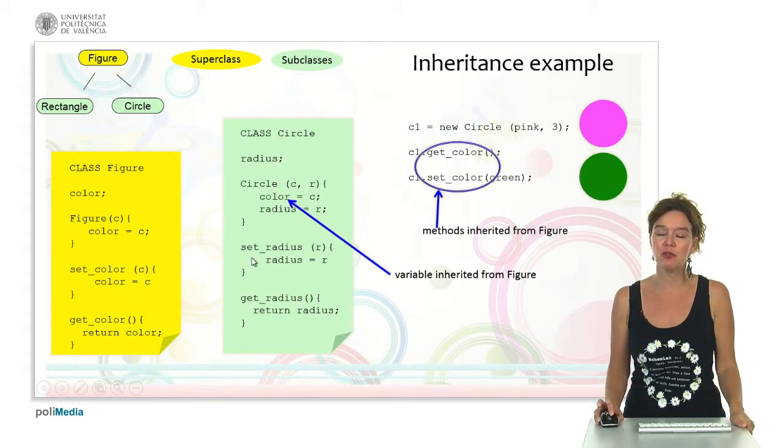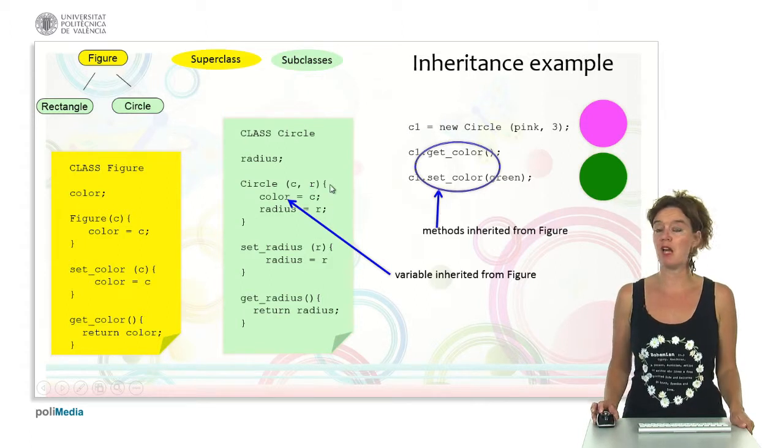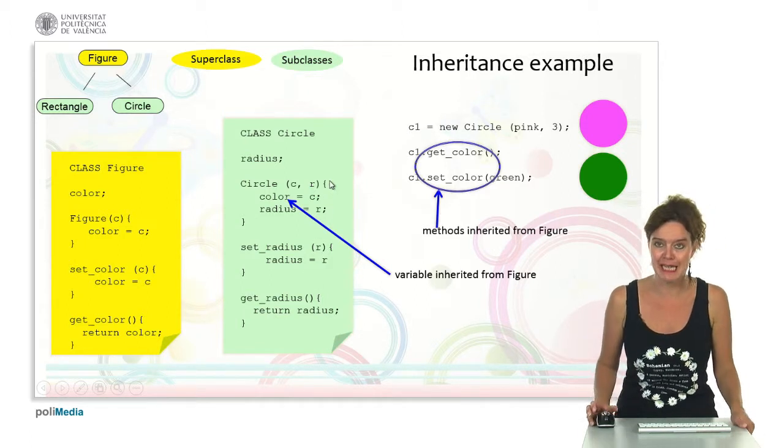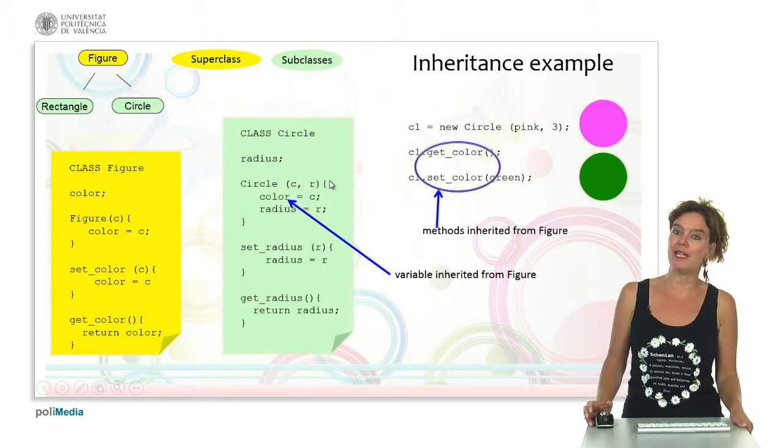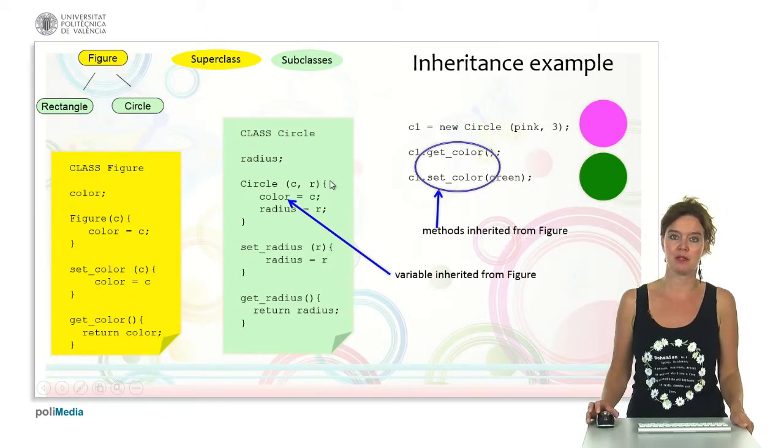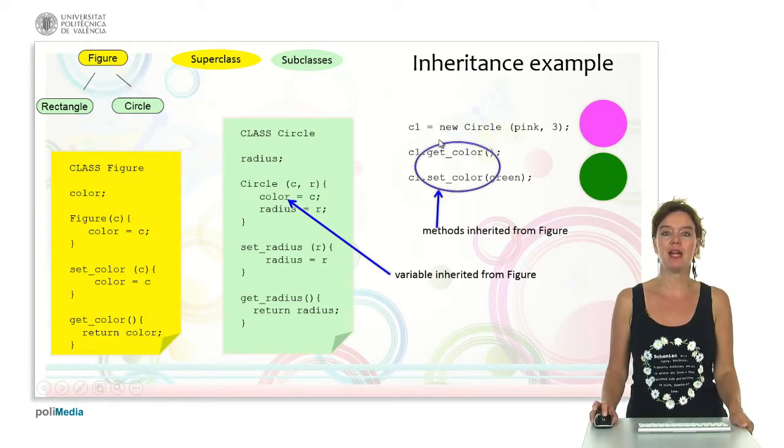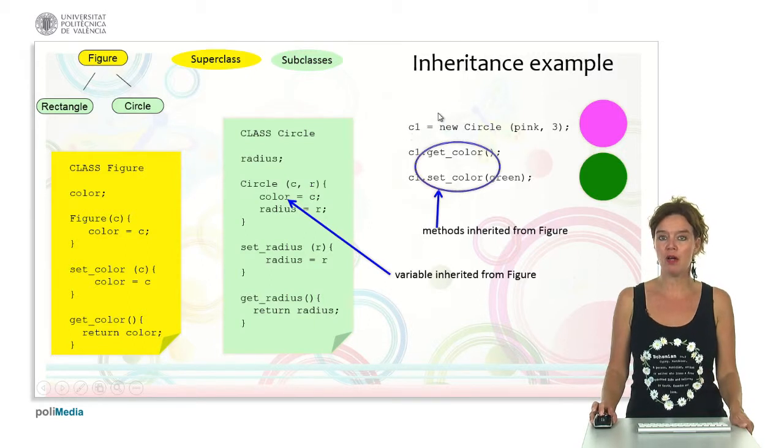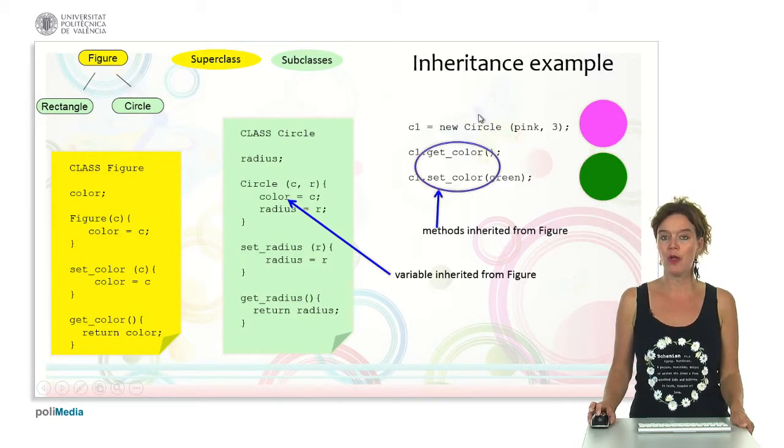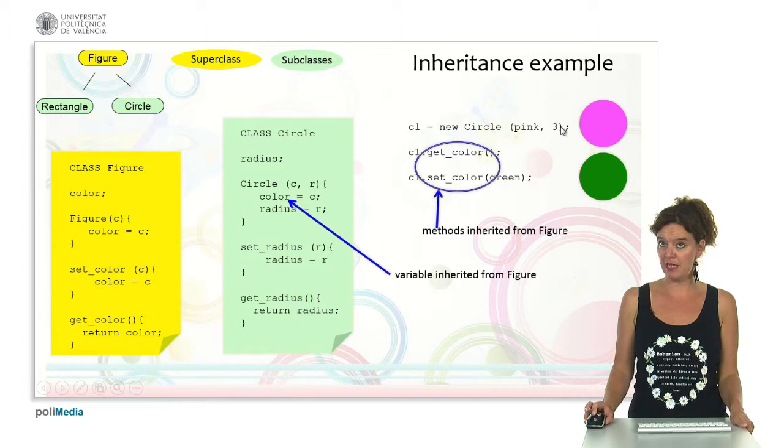Here we have the setter for the radius and the getter for the radius. In this class we don't have to make setters and getters for color because we inherit them from the superclass. So here you can see that we say C1 is a new circle that is pink and radius 3.